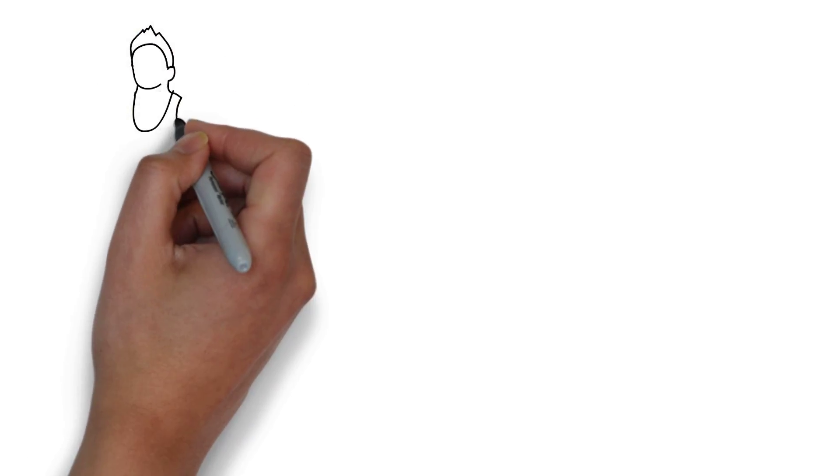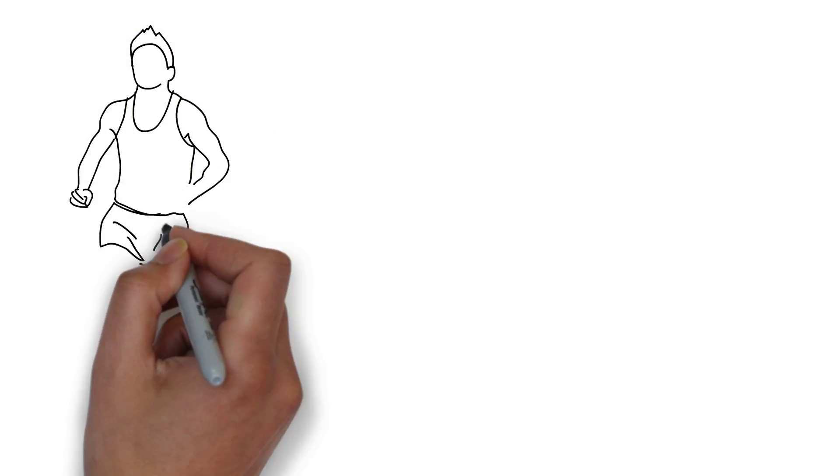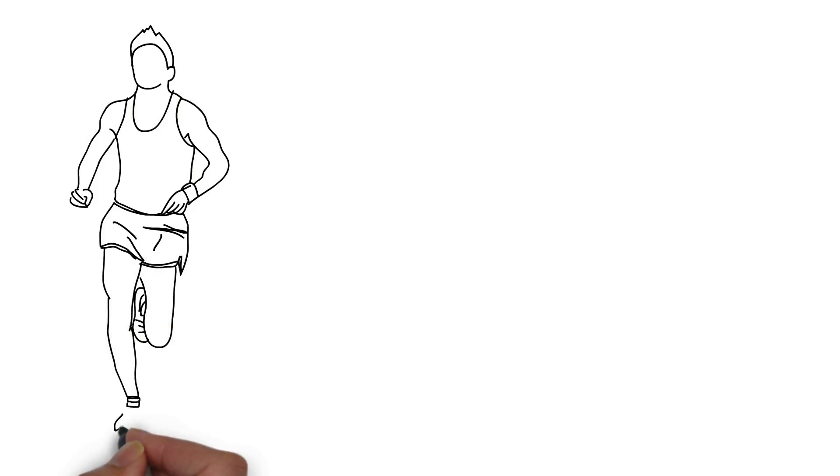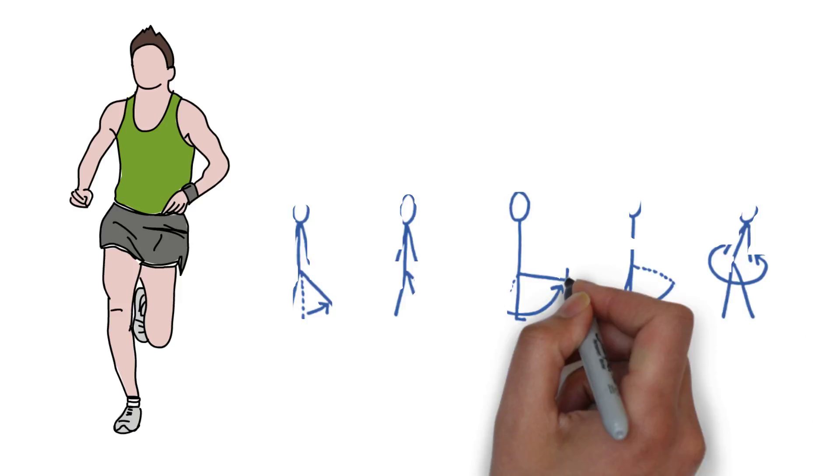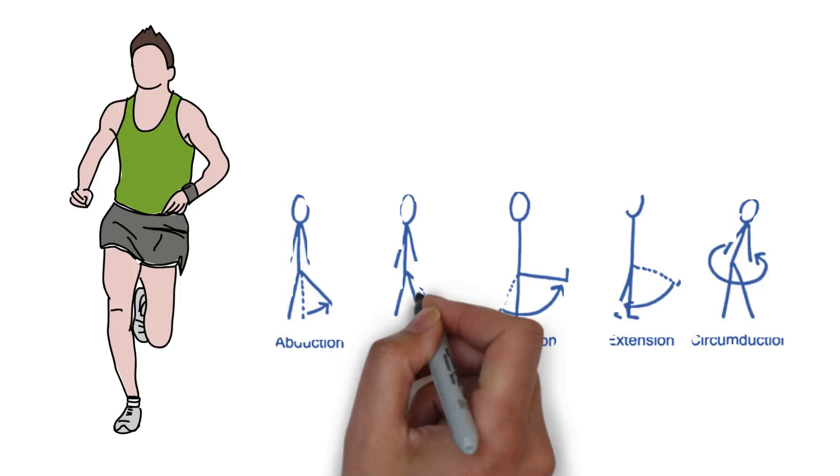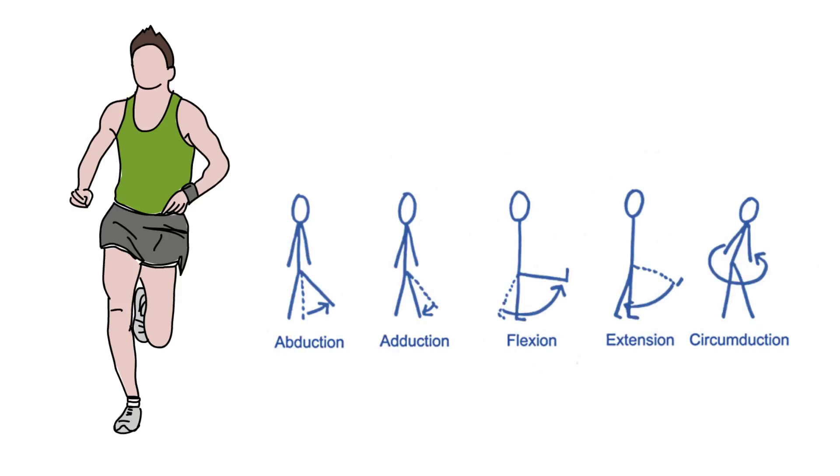The hip joint is one of the most important joints within the body. It plays a major role in bearing the weight of your entire body and provides a wide range of motion including abduction, adduction, flexion, extension and circumduction.